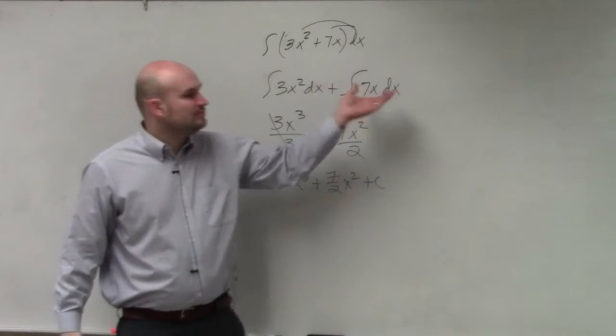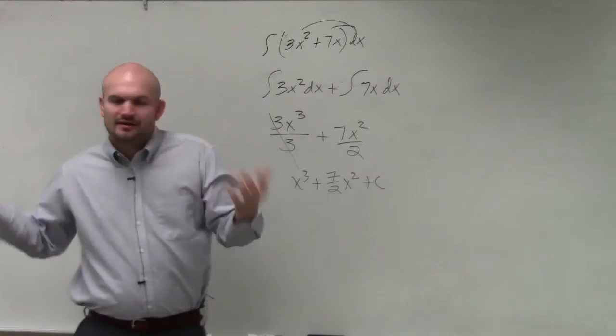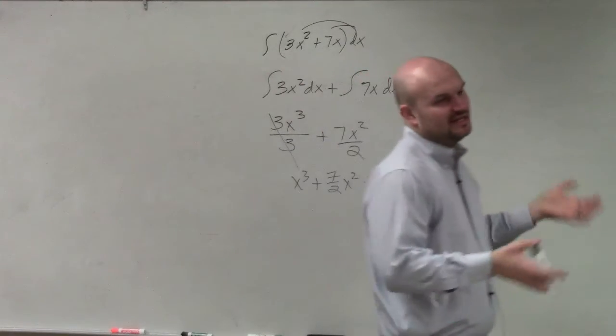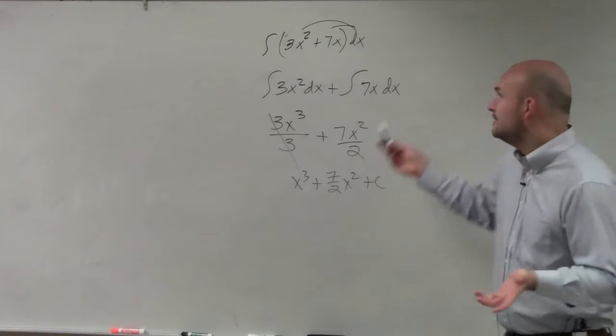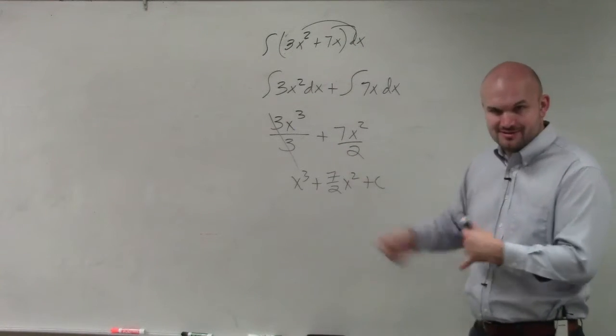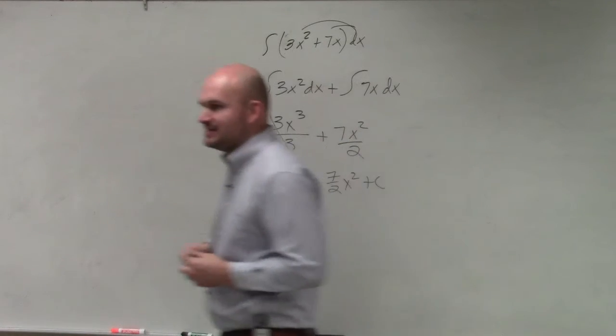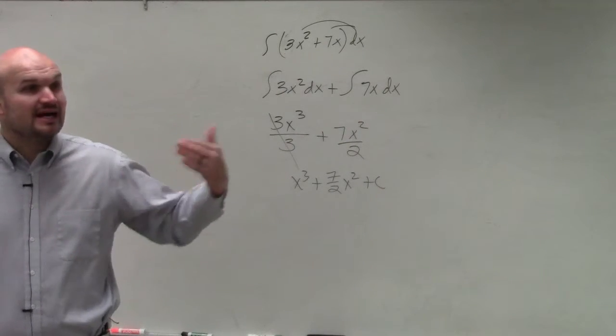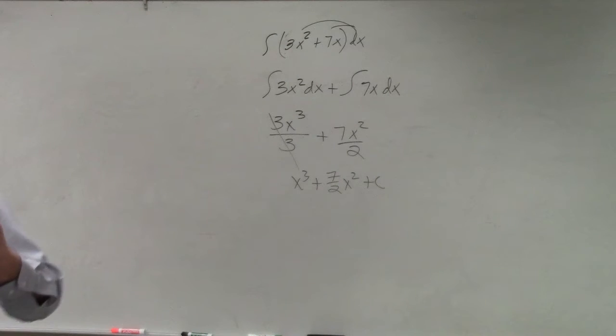We don't need to do two c's for both of them. c is just representing that there is a possible constant out there. If you add two constants, you would get a third constant. So we just need to make sure we apply that there is a constant that could exist. And that's it.